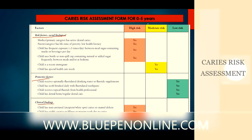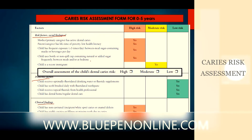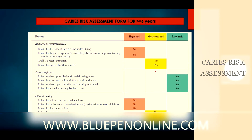This CAT risk assessment applies to children zero to five years. There is also a CAT risk assessment for children more than five years, with slight differences. Based on these categories and overall assessment, we can categorize the child as high, moderate, or low risk, mainly to guide further treatment. For children more than six years, the tool has fewer items — questions regarding bottle use are not included, but most other questions remain. Under clinical findings, more than one interproximal caries is high risk, while defective restorations and wearing an intraoral appliance fall under moderate risk.